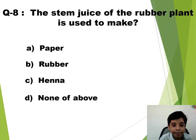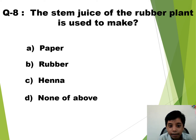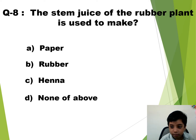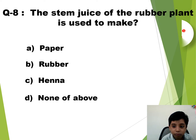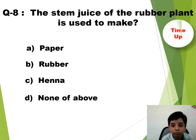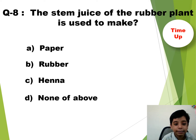Question number 8. The stem juice of the rubber plant is used to make. The time starts now. Time up. So the answer is B — Rubber.